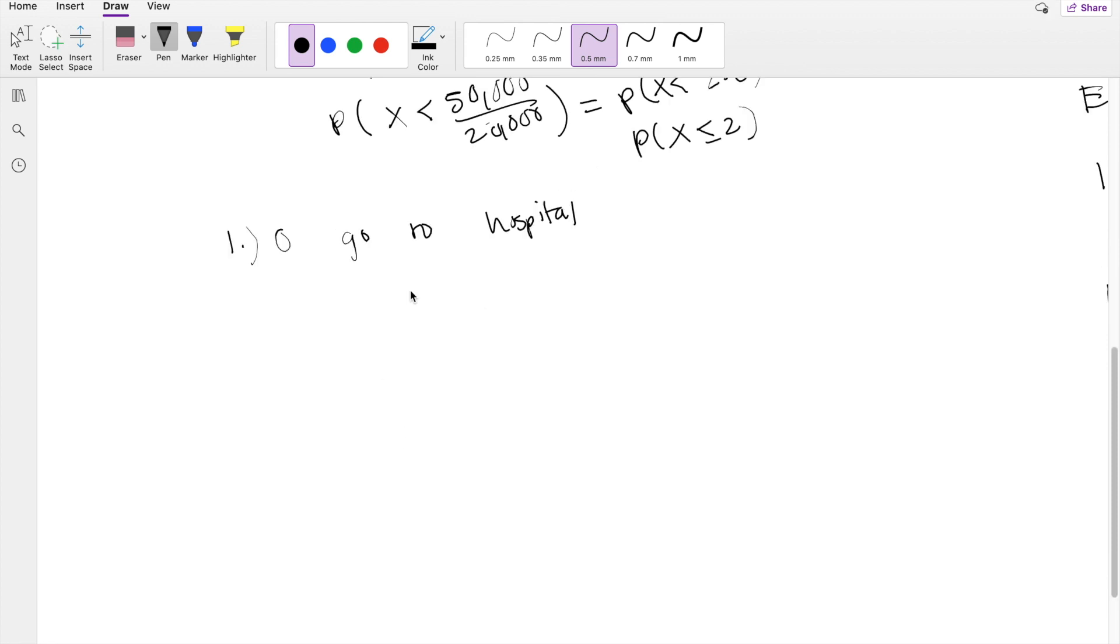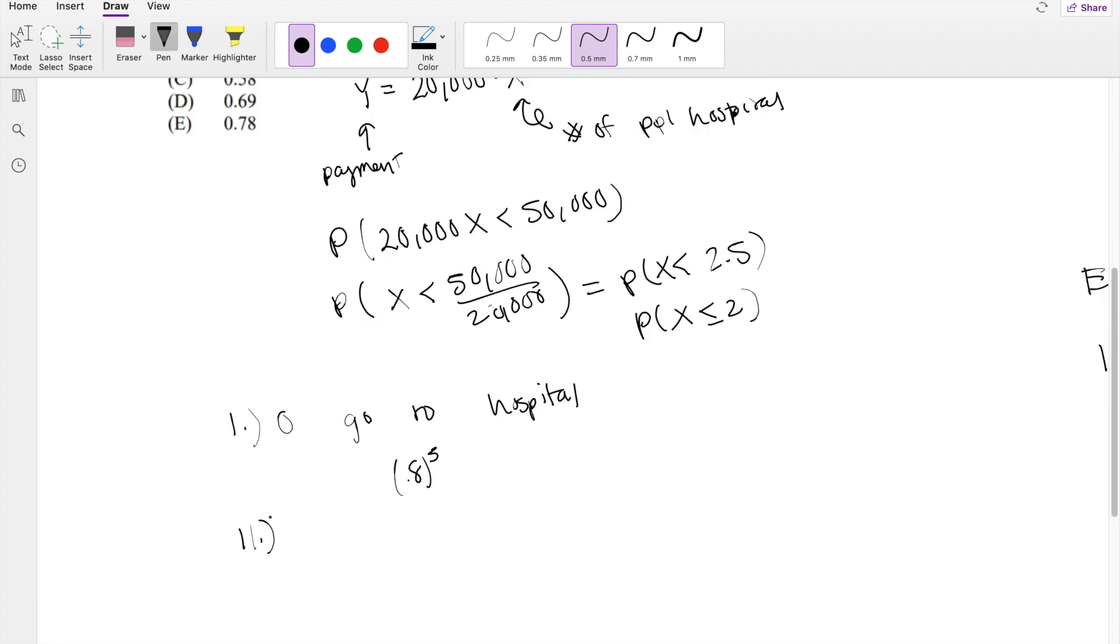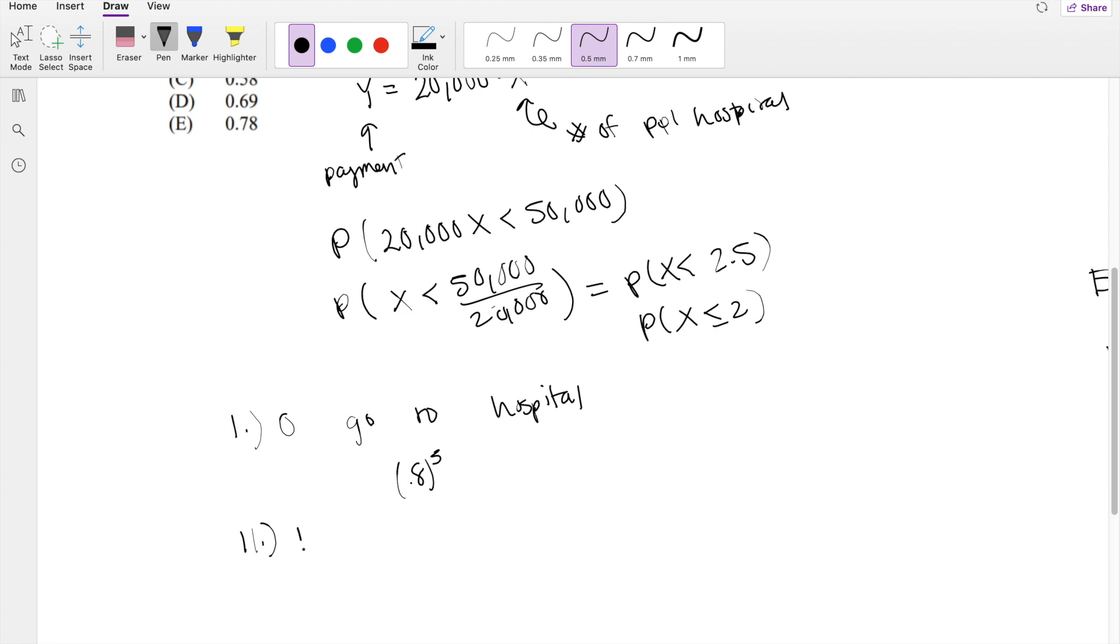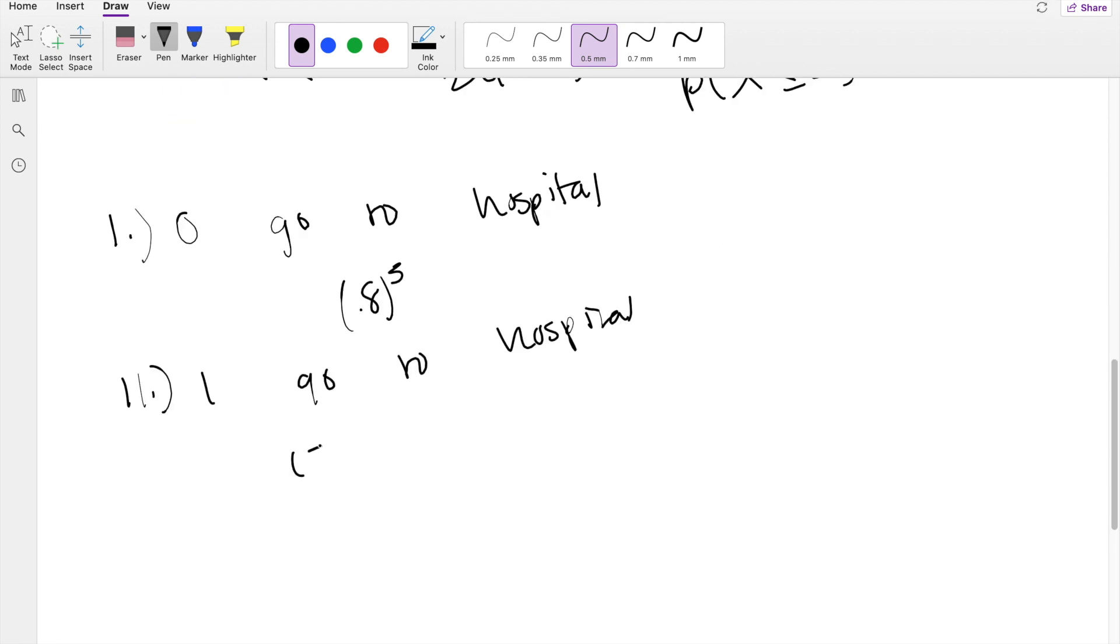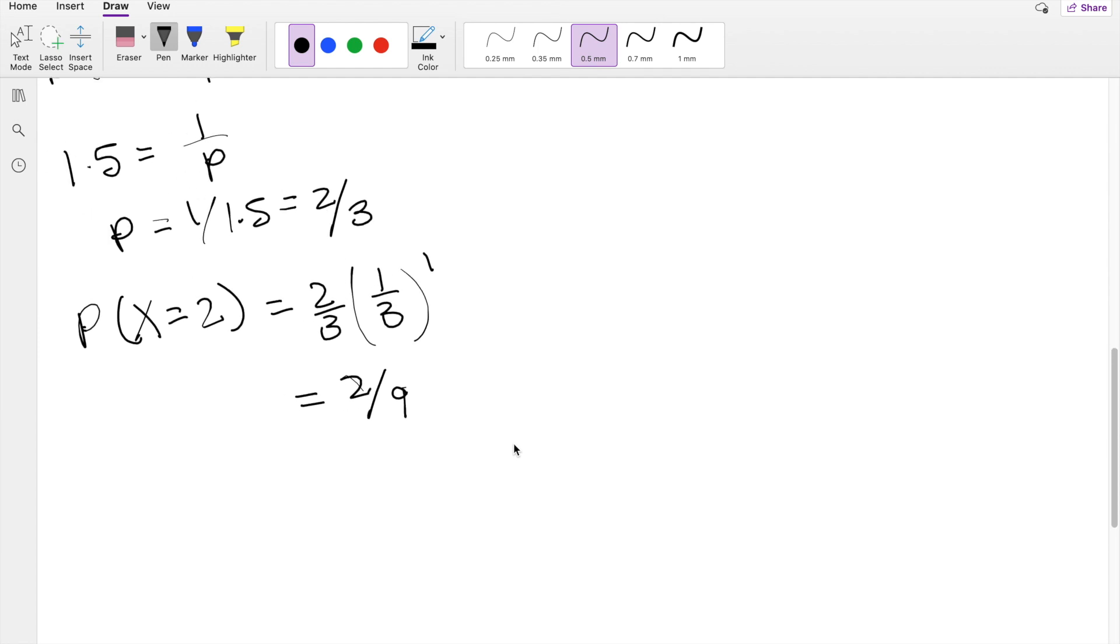That means that will be 80% raised to the fifth power. Number 2 is 1 person can go to the hospital. So that means out of 5 employees, 1 goes to the hospital with a probability of 0.2, and then 4 of them are not hospitalized with a probability of 0.8 to the fourth times the probability that they're only hospitalized once, which is 2/3.